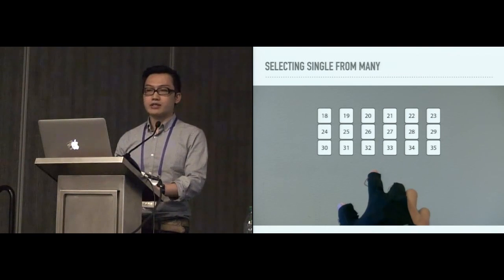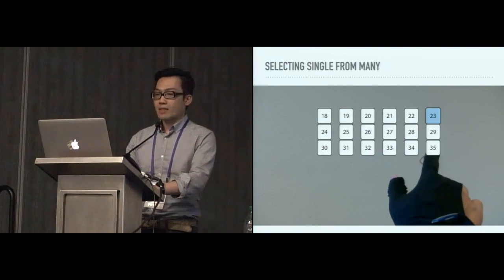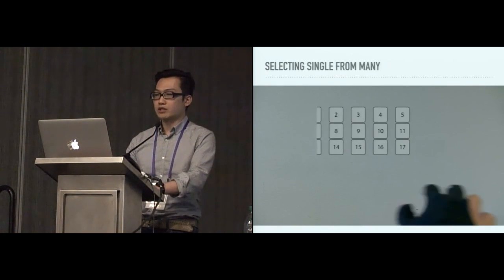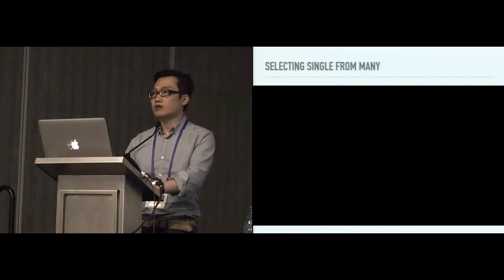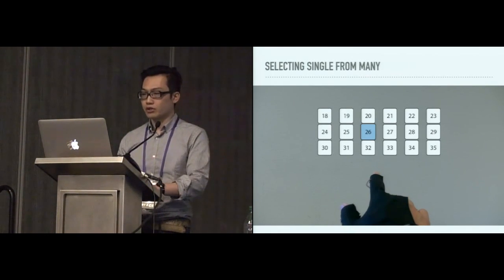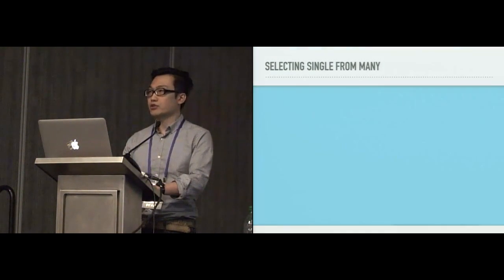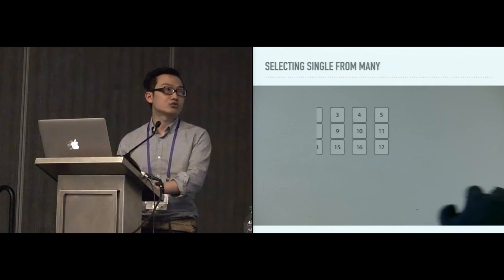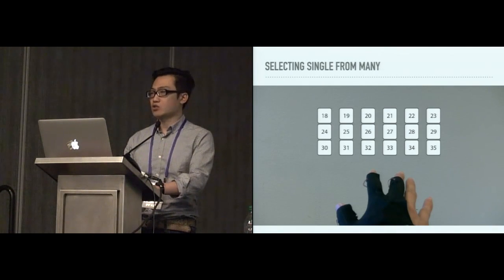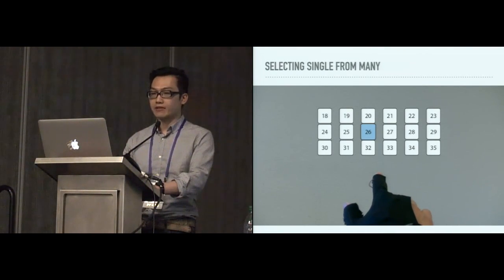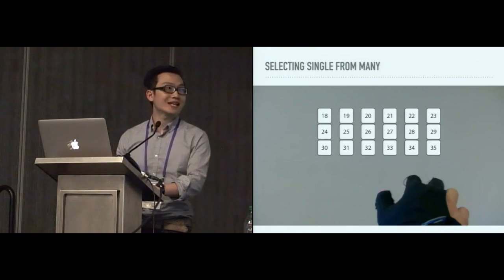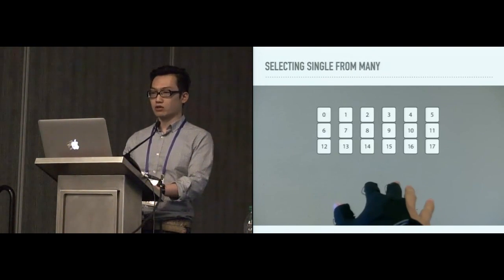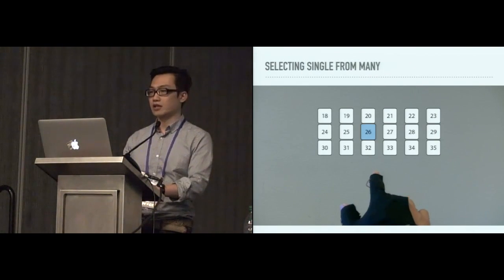The second one is selecting single from many. The system is not activated until a pointing gesture is recognized. And one of the icons will be highlighted according to pointing orientation. And by bending the index finger, you can select an item. We also designed this grab and drag gesture to activate a swiping action. Again, there is the same vibration supplied here, so when you are selecting an icon, you can feel a vibration pulse on the finger, and also when you are moving between different icons.